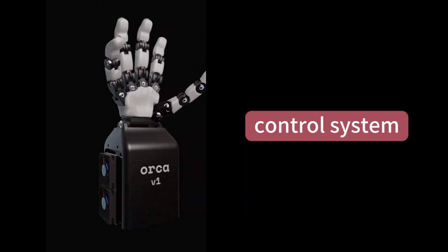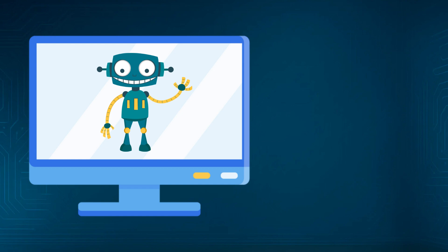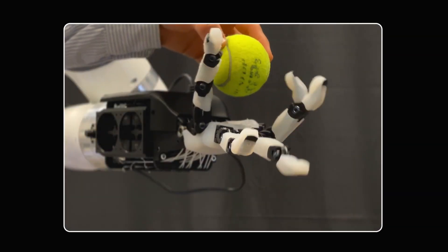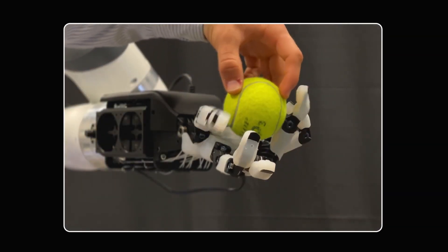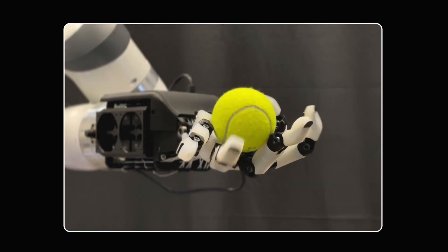Now let's look at the control system. Many robots perform beautifully in simulation, but fail spectacularly in the real world—the infamous sim-to-real gap. Orca hand, however, achieves zero-shot reinforcement learning transfer, thanks to its self-calibration system.